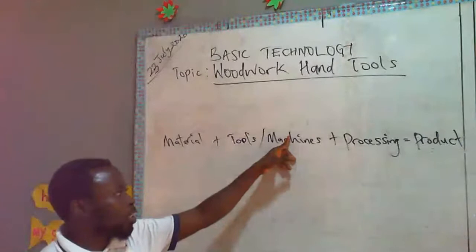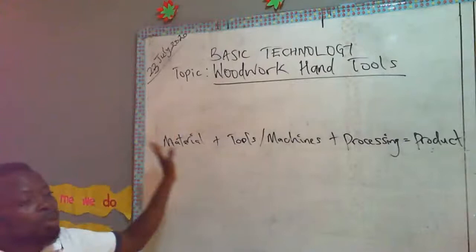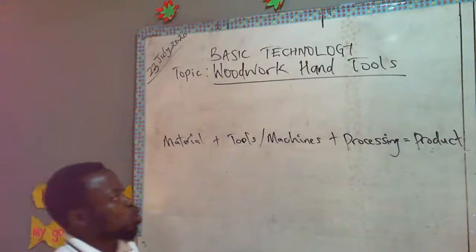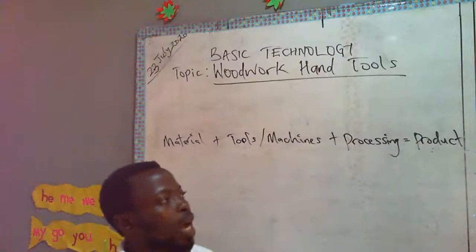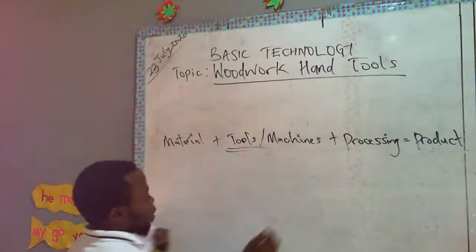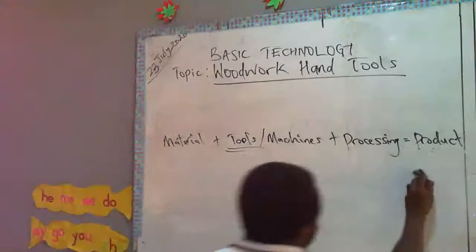Now, tools and machines — the machines part we are going to deal with in subsequent topics. For now, when we say woodwork hand tools, we refer to those smaller, handheld tools which we use to work upon wood or timber to make products out of them. These are the major concepts involved in technology, and now we are going to discuss the tools involved in woodwork projects.